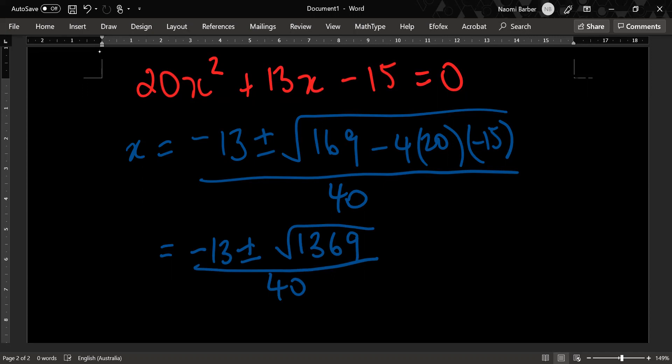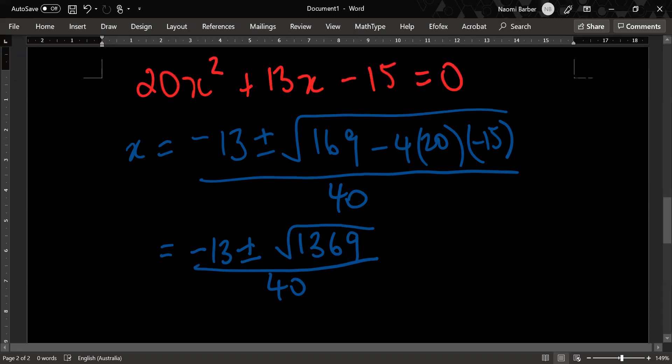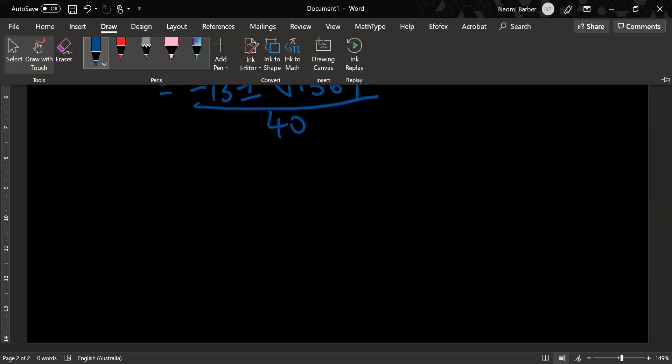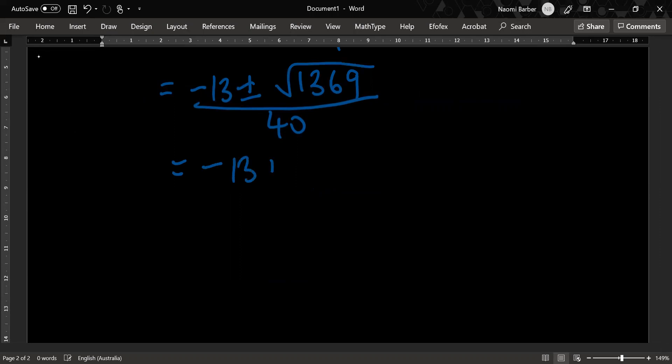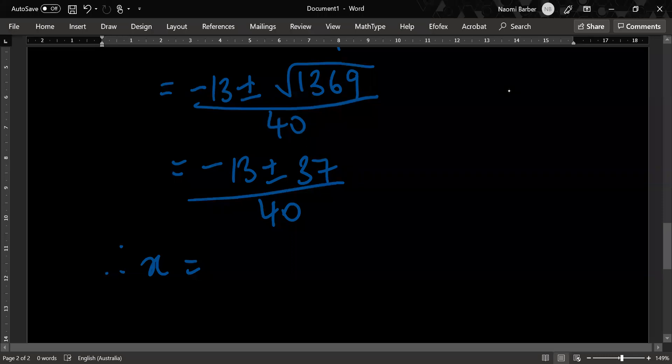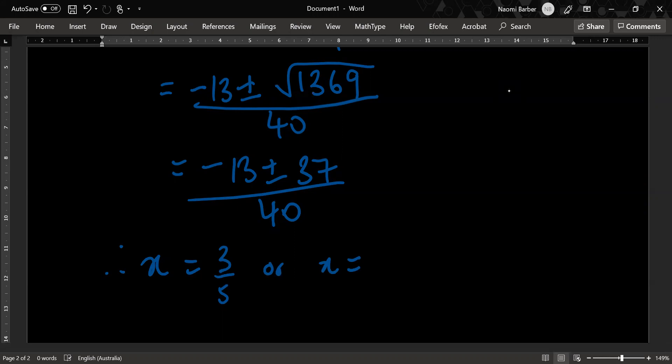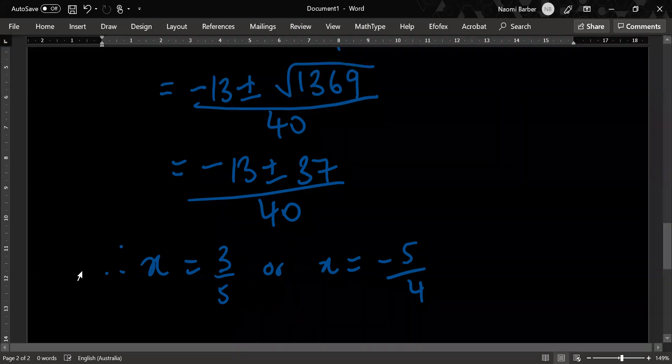Let's try that for fun. Oh, 37. So at least we have hope. Let us scroll down a bit. So it's equal to minus 13 plus or minus 37 over 40. Therefore, x equals either 3 over 5 or x equals negative 13 minus 37, which is minus 5 over 4.